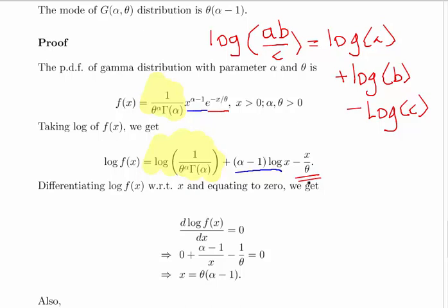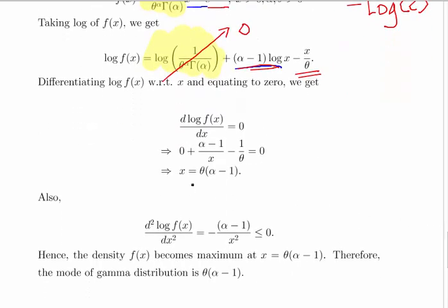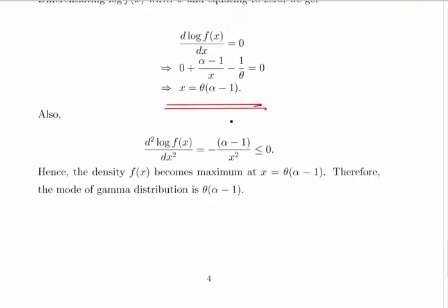Taking the derivative of the log PDF with respect to X: the constant term goes to zero, the derivative of alpha minus 1 times log X is alpha minus 1 divided by X, and the derivative of minus X divided by theta is minus 1 over theta. So the expression becomes alpha minus 1 divided by X minus 1 over theta. Setting that equal to zero and solving for X, we get the mode equals theta times alpha minus 1.